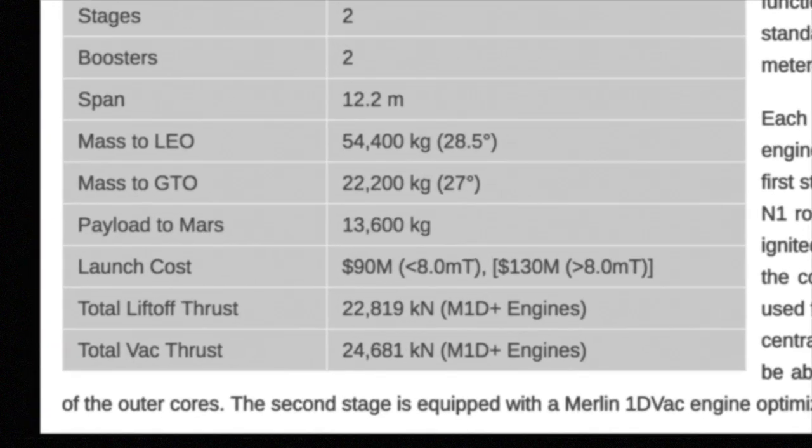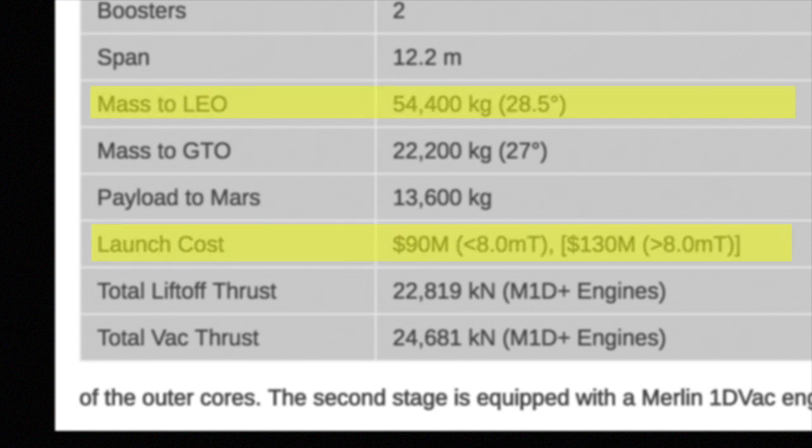Current launch costs, for SpaceX's Falcon Heavy rocket, are $130 million, for 54,400 kg to low Earth orbit, or about $2,400 per kg.